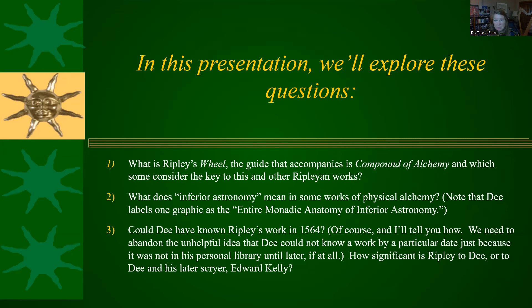The Compound of Alchemy isn't in my library here, but I'm going to give you a presentation on part of it. A lot of works are also dangerous to have, so we know that Dee had a lot of works that he didn't list in his library catalog. One I've mentioned is the Codex Marcianus. I've also mentioned that he certainly had to know Reuchlin's Art of Kabbalah, because he has other works of Reuchlin and also works of Riccio, who is Reuchlin's main Kabbalistic source. So Dee, like every other human, probably read a lot of books that don't show up in his library catalog, and Ripley is one of them.